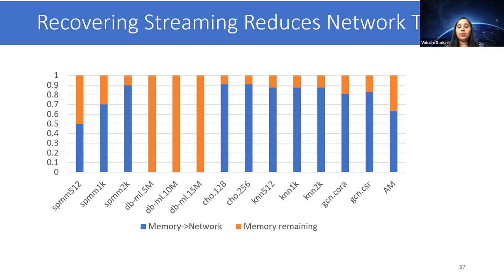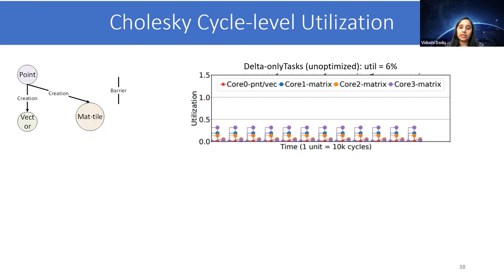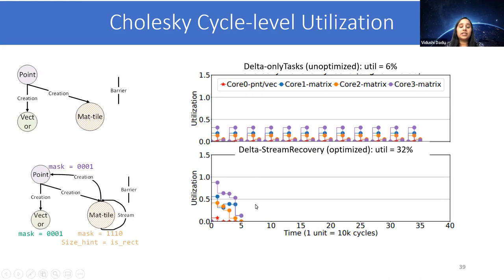Now we looked at the impact of stream recovery. We also want to understand overall how stream recovery and load balancing work together. For that, let's look at the cycle level utilization of the Cholesky workload for two scenarios. For the first one, we show for only tasks, which is not optimized. The thing here is that you cannot do streaming communication, so you still have a barrier after each iteration, but within that you can balance using the size hint optimization. When you switch on the stream recovery optimization, there are no barriers, and you also improve utilization. The reason is because the streaming edge results in improved parallelism, and then only the load balancing optimizations can help you more. So they work together to help each other.